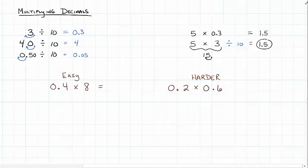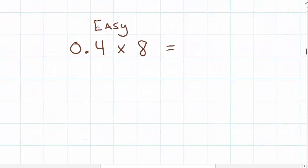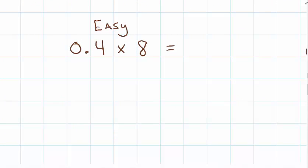Let's zoom in on the easy one first. First, I'm going to recognize that 0.4 times 8 is the same thing as 4 times 8, and then we divide that answer by 10.